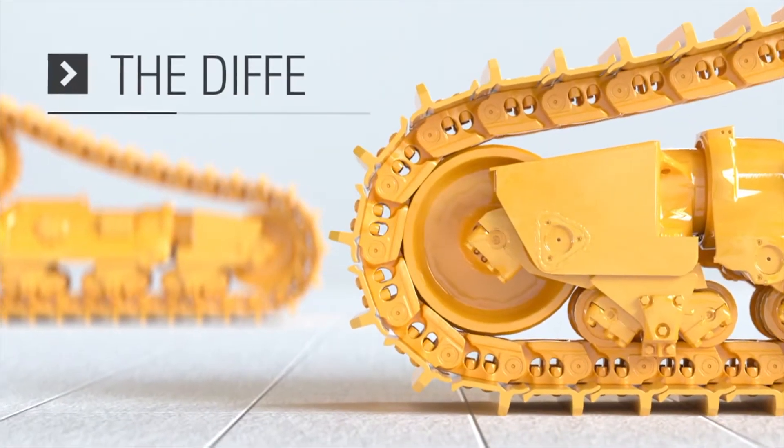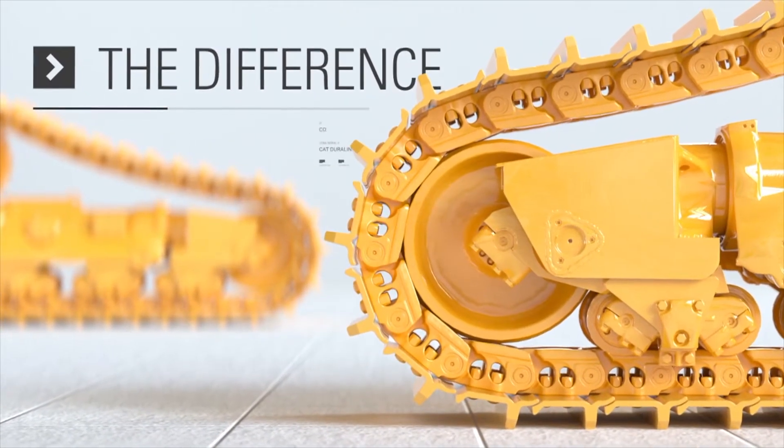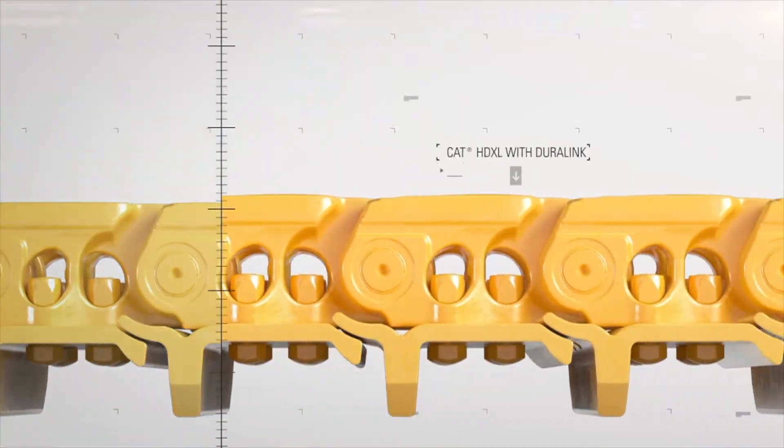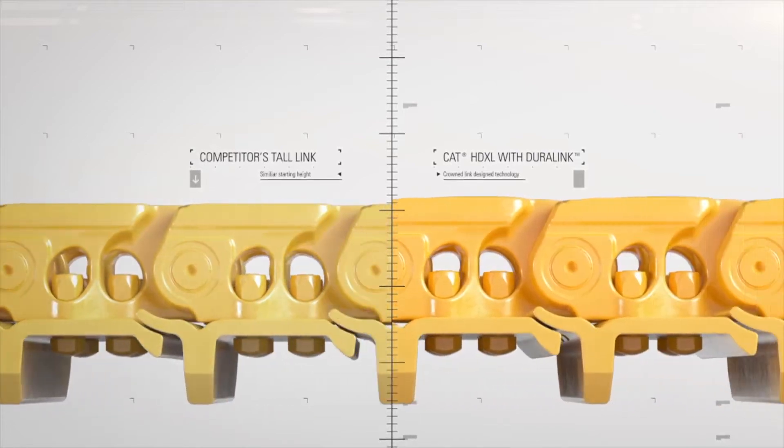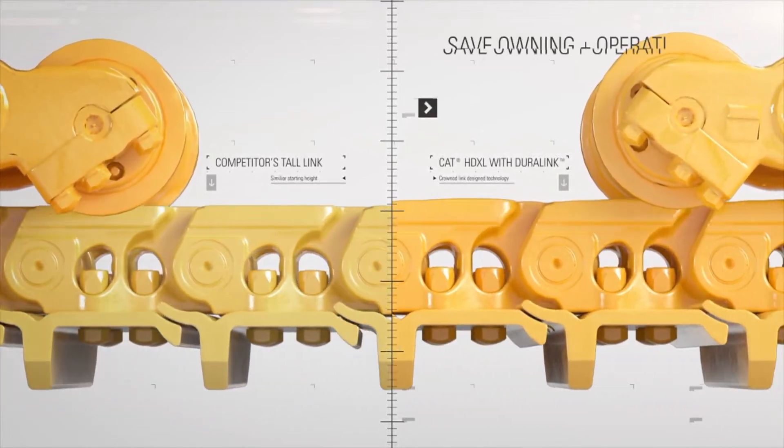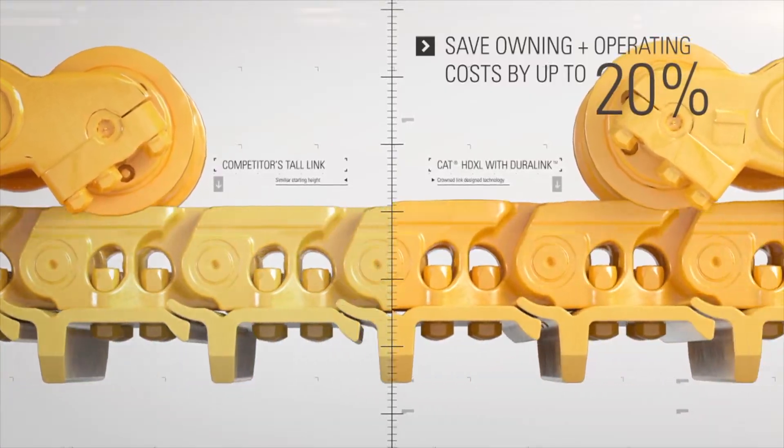Competitors will offer you a tall link undercarriage saying they're the same as Caterpillar but at a lower price. Not quite. The total height may be similar, but the Cat HD XL with DuraLink features a game-changing design which can save your owning and operating costs up to 20%.